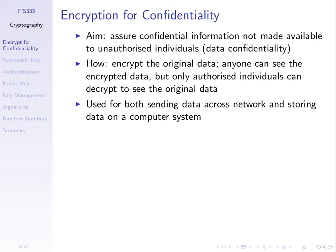So assuming someone can intercept messages on a network, what we do is encrypt the data first. We use encryption for sending data across a network, but we use the same technique for storing data on a computer system. We have a shared computer system — one computer, multiple users use it. So one way to make sure that other users cannot read your files is to encrypt those files on the hard disk. We use the same technique in that case.